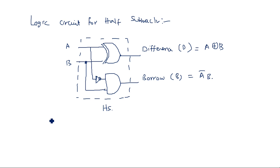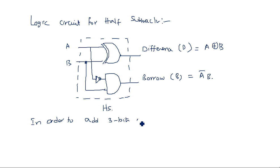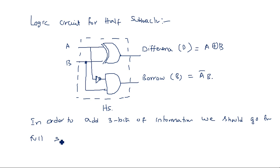Using the half subtractor we can subtract only two bits of information. In order to subtract three bits of information we have to go for the full subtractor. Before going to the full subtractor, we can also design the half subtractor using NAND gates and NOR gates.